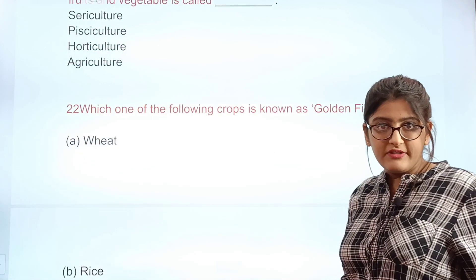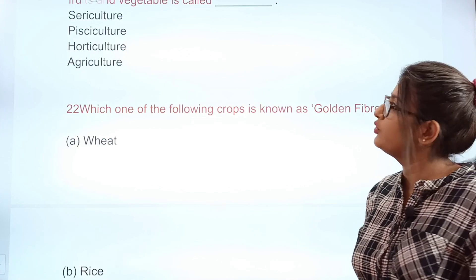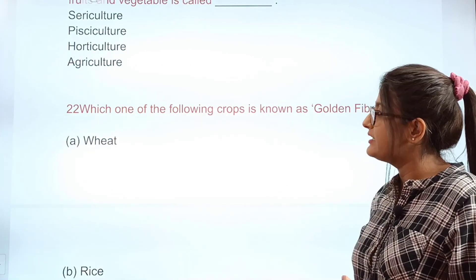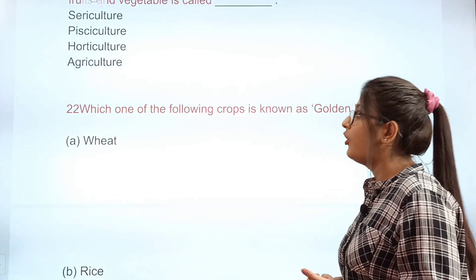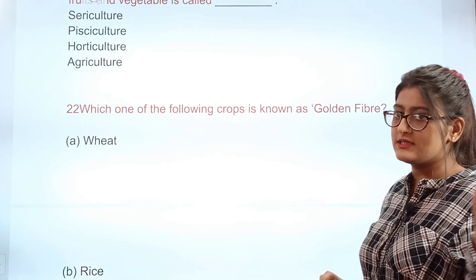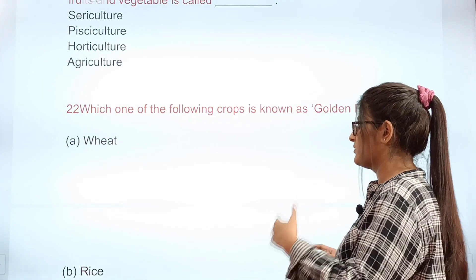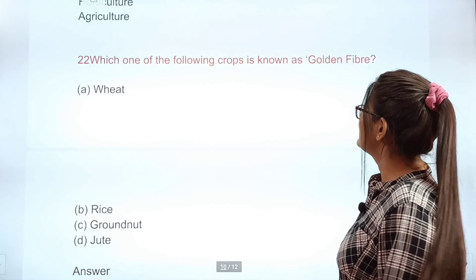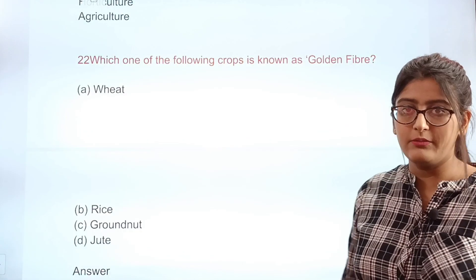Question 21: Specialized cultivation of fruits and vegetables is called what? Options: agriculture, pisciculture, horticulture, or sericulture. The correct answer is C — horticulture.